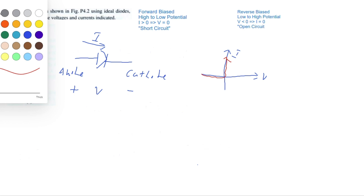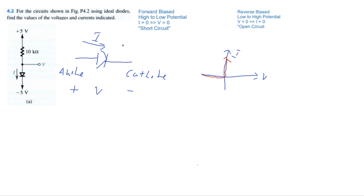We identify these two regions as forward biased and reverse biased. Forward biased is when the diode goes from high potential to low potential — basically the voltage drop is greater than or equal to zero. The diode will experience no voltage drop and will conduct current, behaving like a short circuit. When the voltage drop goes from low to high potential, we call this reverse biased: the voltage is less than zero, meaning there's no current and it behaves like an open circuit.